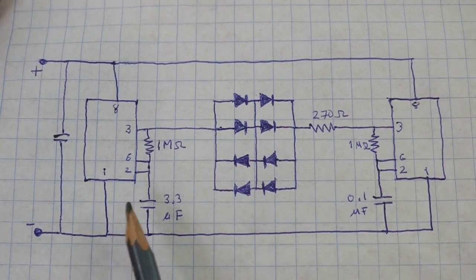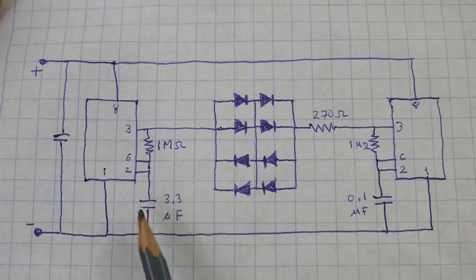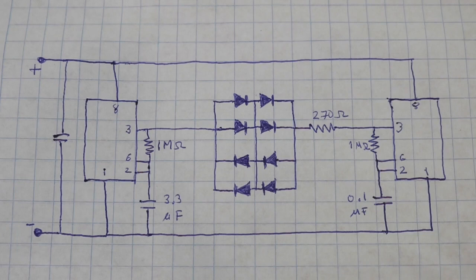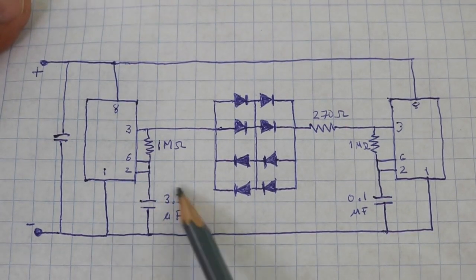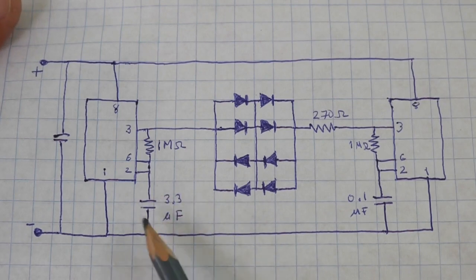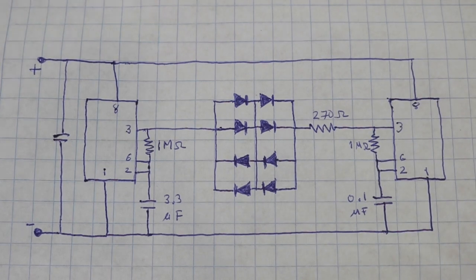But notice that we have different capacitances. The capacitance is what controls the rate of flashing or the frequency. A high capacity like in this case produces a long pulse and a small capacitance produces a very short pulse.